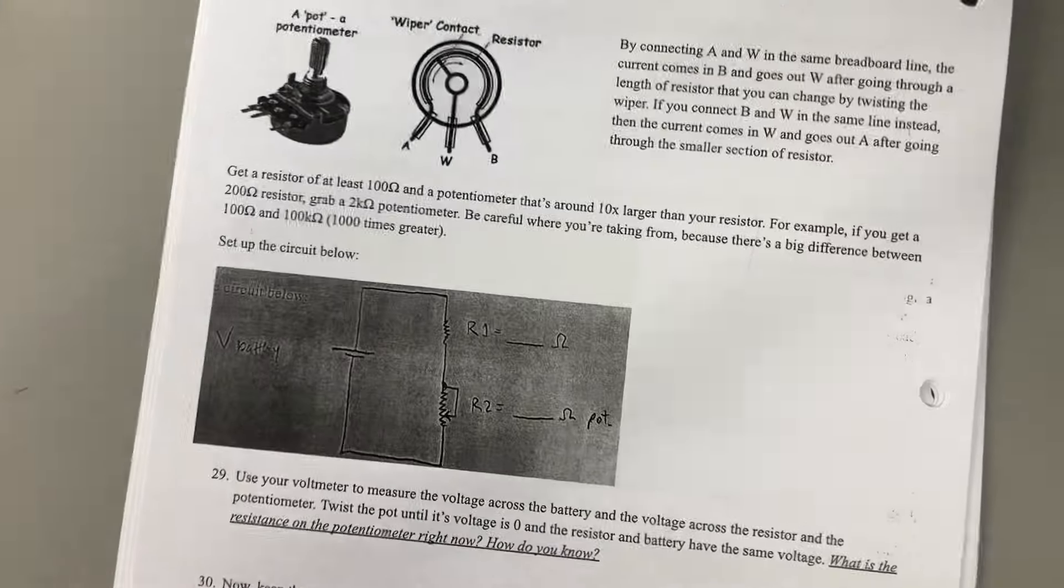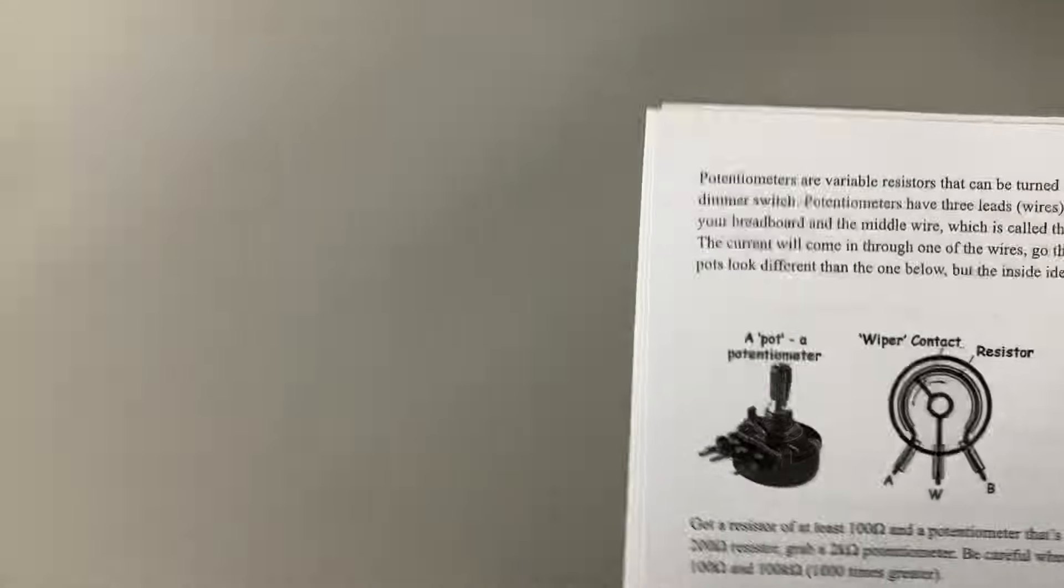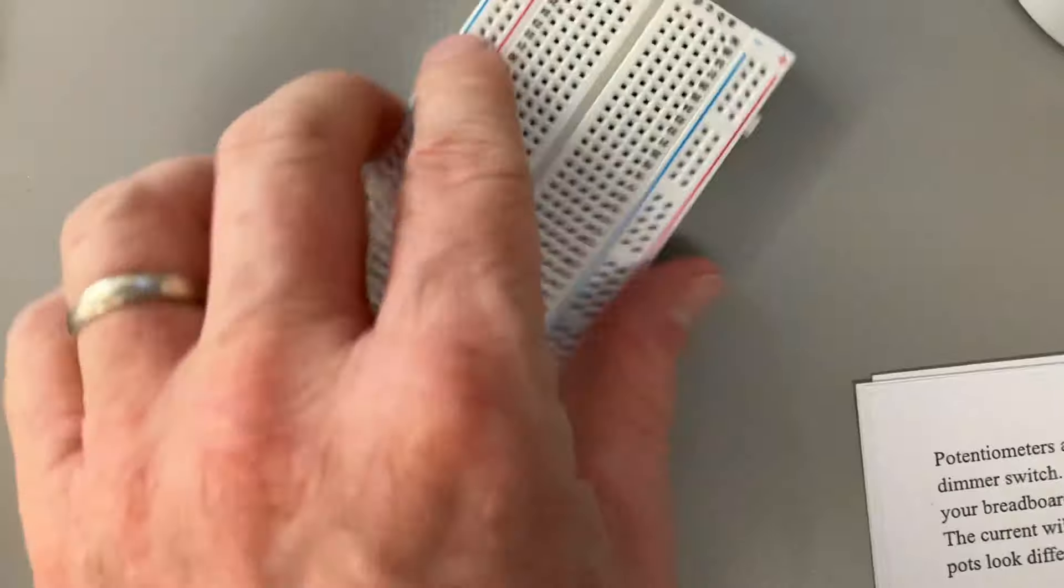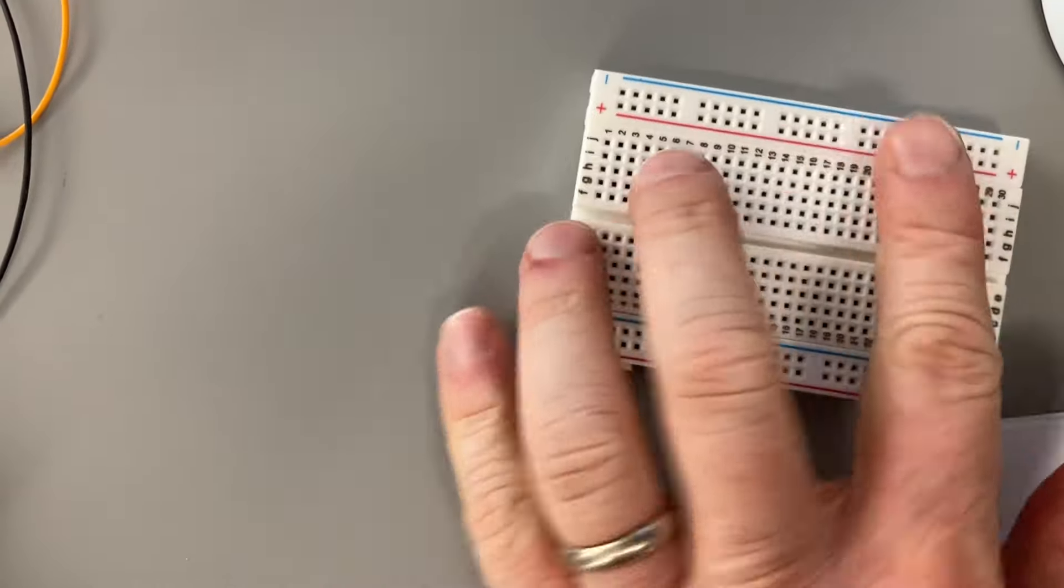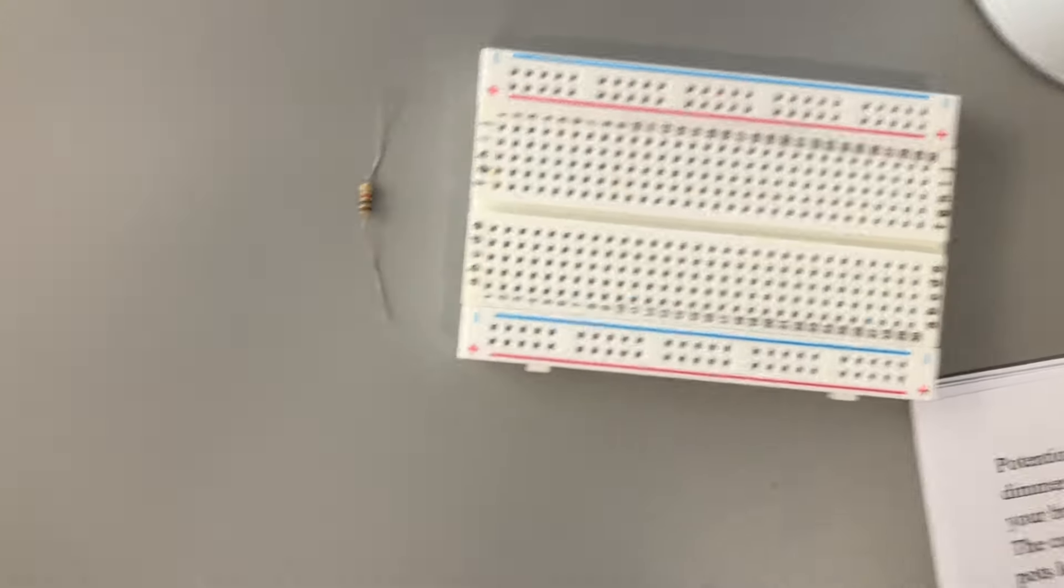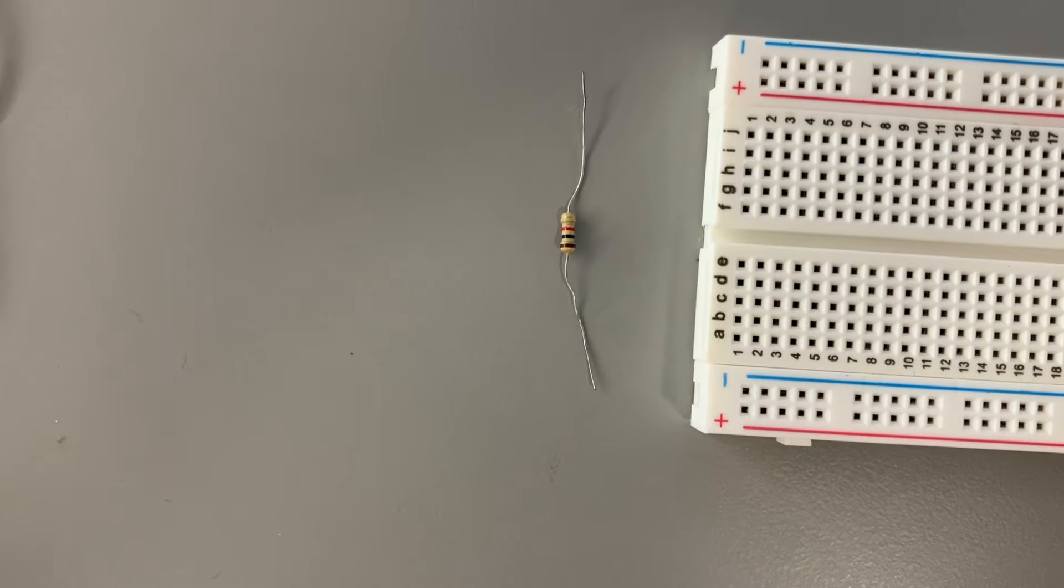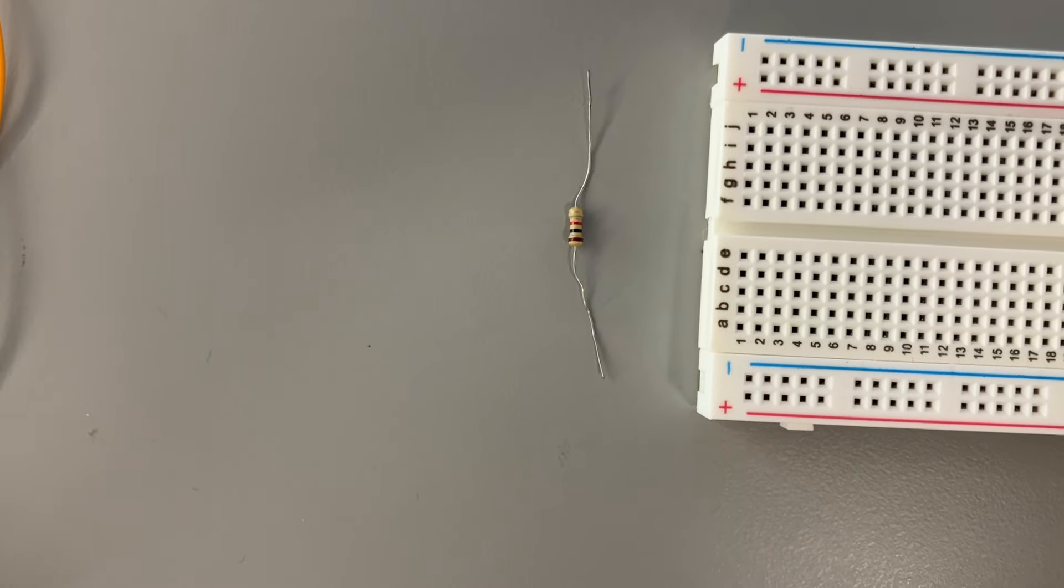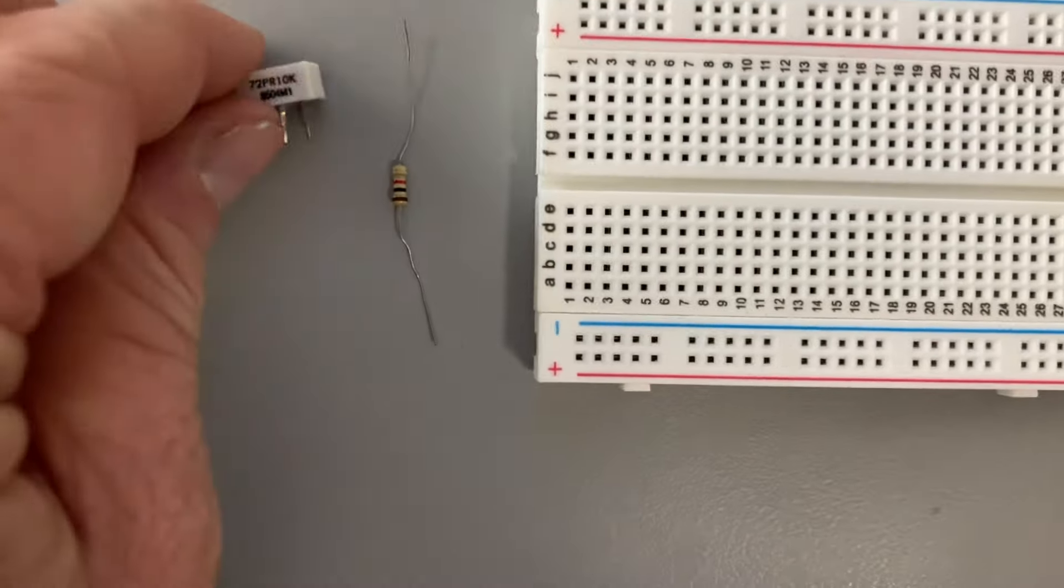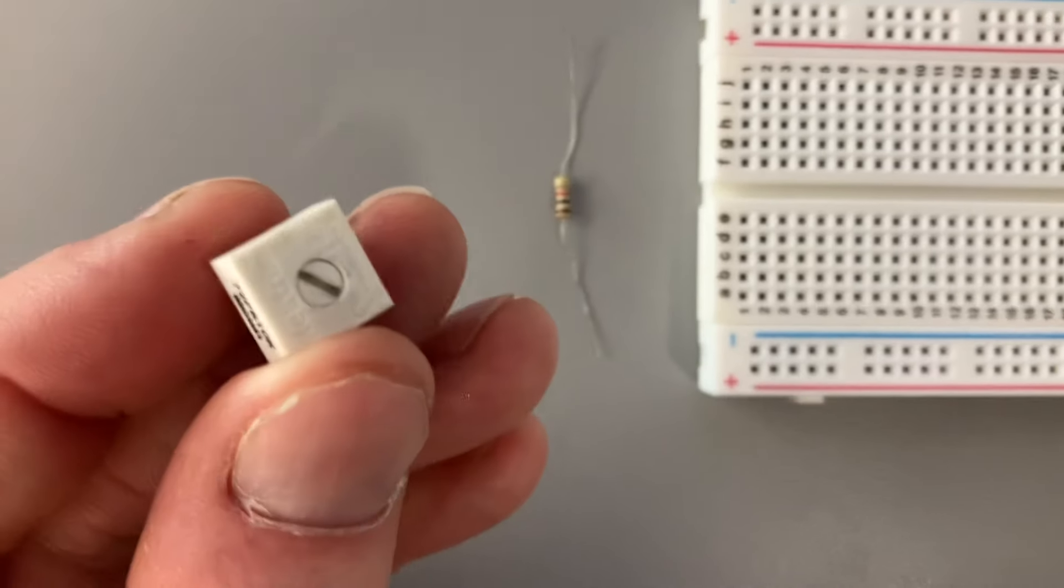For this experiment, you will need to grab a breadboard which looks like this, a resistor. I like to use a 1000 ohm resistor which is brown, black, red. A potentiometer which looks like this.